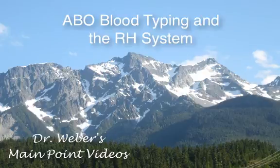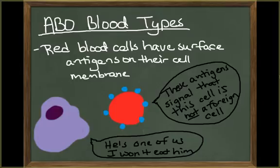This segment is on ABO blood types and the RH system. Red blood cells have surface antigens on their cell membrane. These antigens signal to your body that the red blood cells are normal cells and should not be considered foreign. Foreign cells would be attacked by the body's natural immune system. These antigens allow the immune system to ignore the red blood cells rather than attack them.